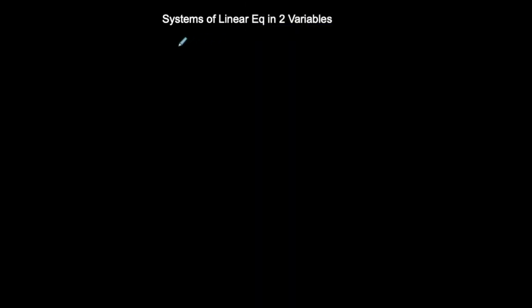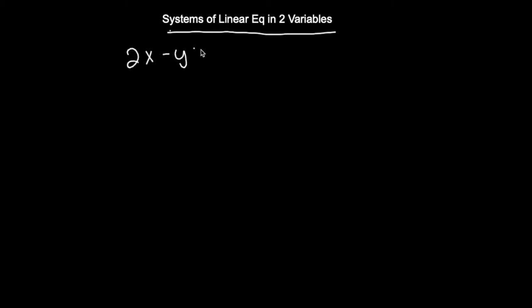I want to talk about systems of linear equations — specifically linear equations in two variables. It's important to note that they are not only linear but also two variables, because it changes when I have more than two variables and it changes if it's nonlinear. Two variables meaning x and y, systems meaning more than one equation, linear meaning two lines. For example: 2x minus y equals 3, and y equals 5x plus 4.